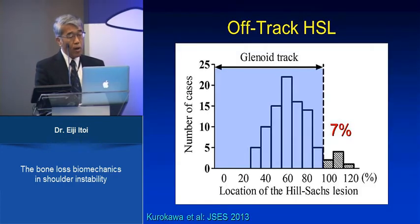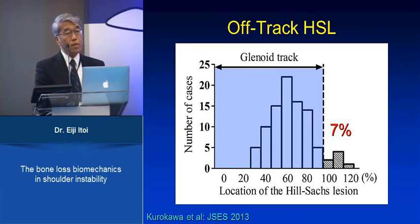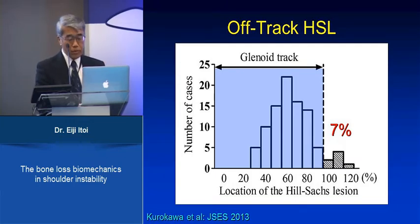How often do we see an off-track Hill-Sax lesion? In our series, we found 7%. This prevalence was exactly the same as the Park report using dynamic examination after Bankart repair. So it's not 30, 40, or 50% — it is 7%.